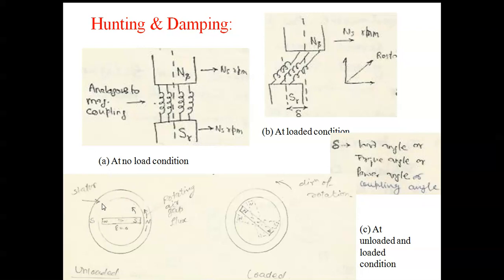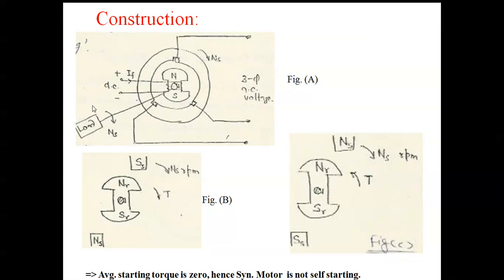The rotor moves at the same speed as the stator field, whether clockwise or anticlockwise. The important thing is there is a magnetic coupling between the poles of the system. This spring analogy represents the no-load condition.